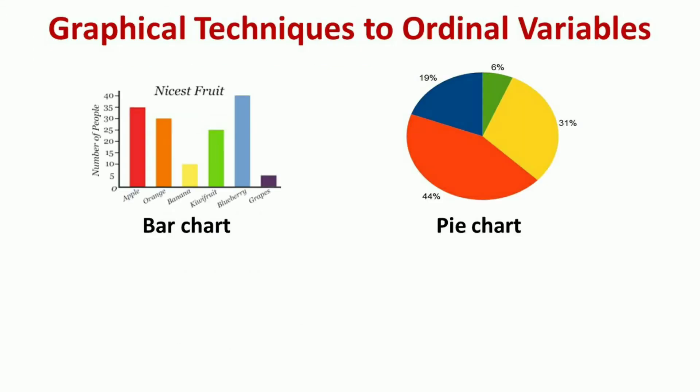Now let's see how to analyze ordinal scale data graphically. Ordinal data can be analyzed graphically using common visualization techniques like the bar chart, pie chart, table, mosaic plots, bump charts, and gradation. The bar chart depicts numerical values against distinct categories on two axes. On one axis, the category levels are listed, and for each category one bar is plotted, with its length along the other axis corresponding to the numerical value associated with that category.